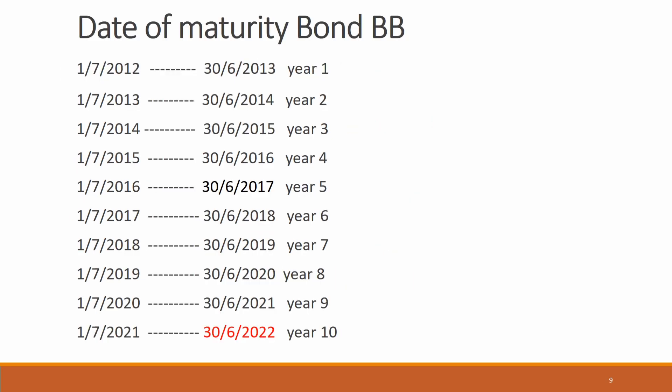Now we look at the date of maturity for Bond BB. The company started Bond BB on 1 July 2012. We calculate for every year, and at the end of Year 10, the date of maturity is 30 June 2022. That is the date of redemption or maturity for Bond BB.